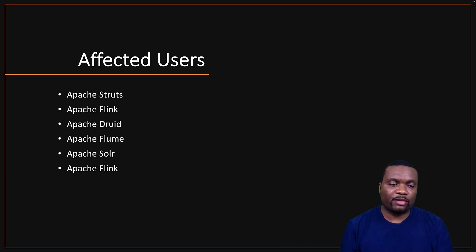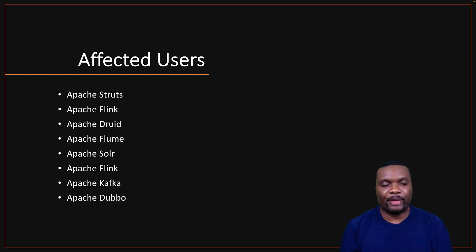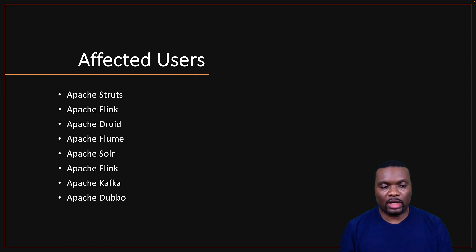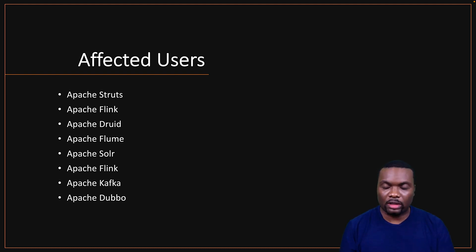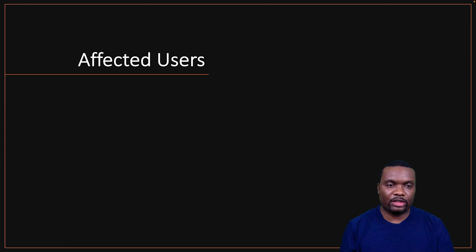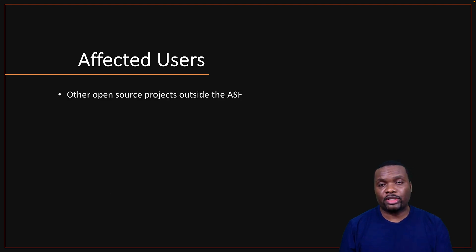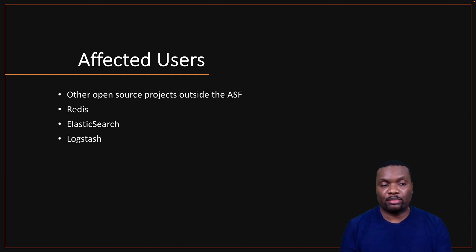There are also several Apache open source projects that are affected — including Apache Flink, Solr, Kafka, and Dubbo, some of which are covered in my course. These projects are significantly impacted because they use the Log4j framework to log what is happening within their applications. There are also other non-Apache projects affected as well.